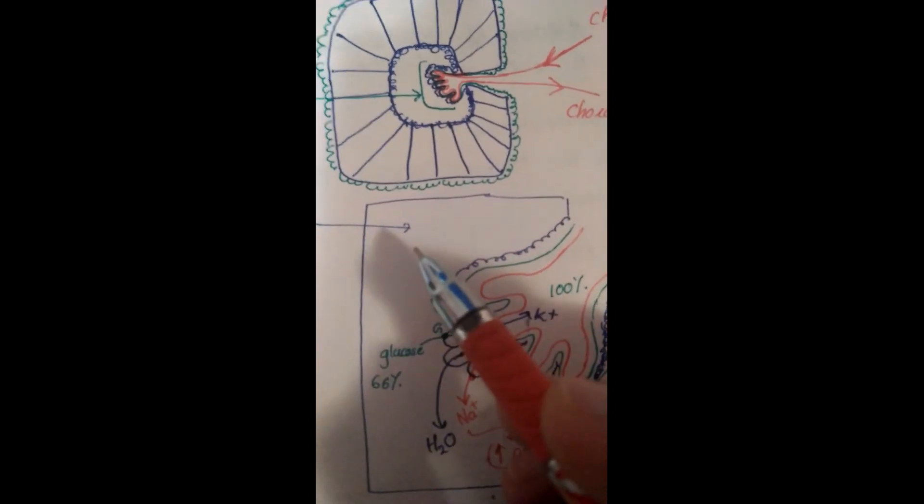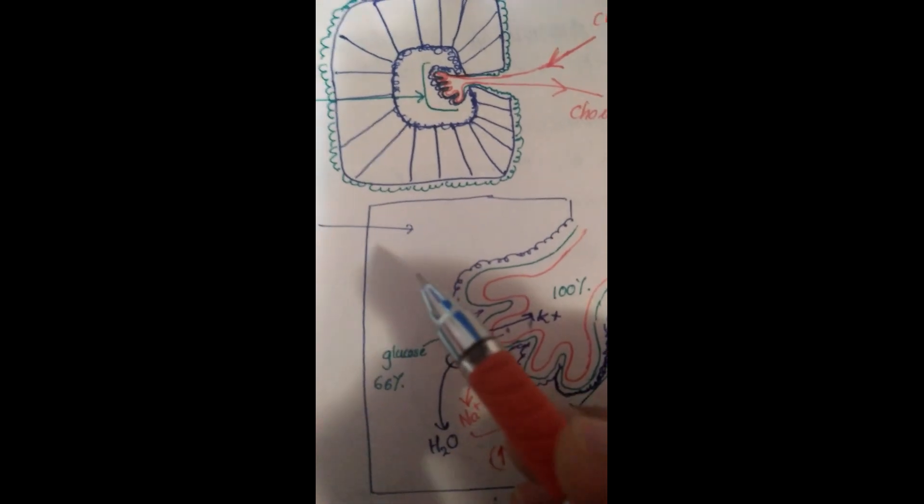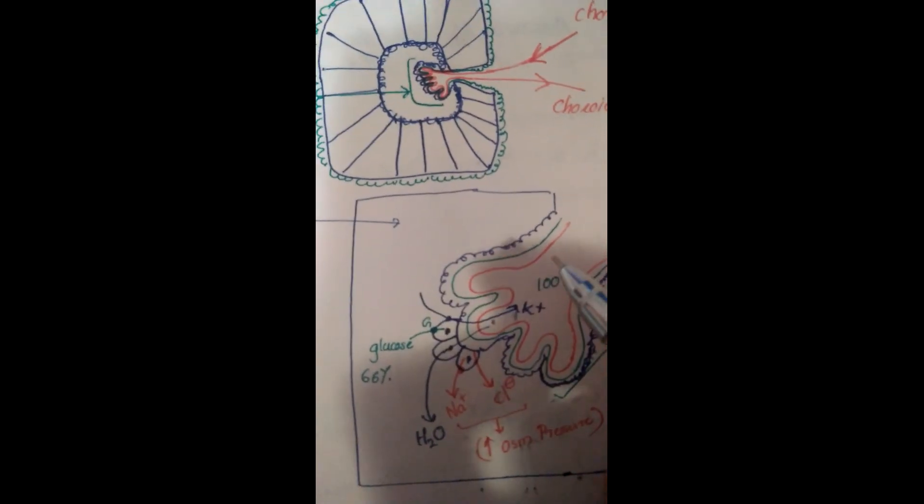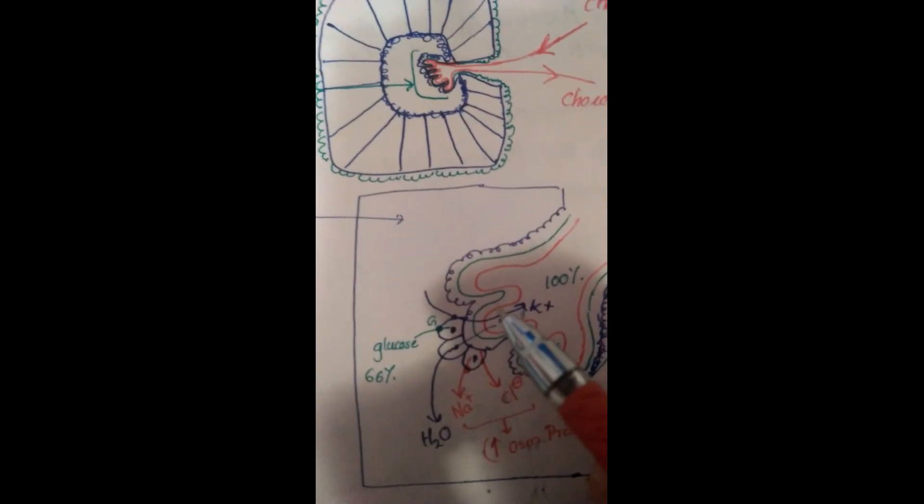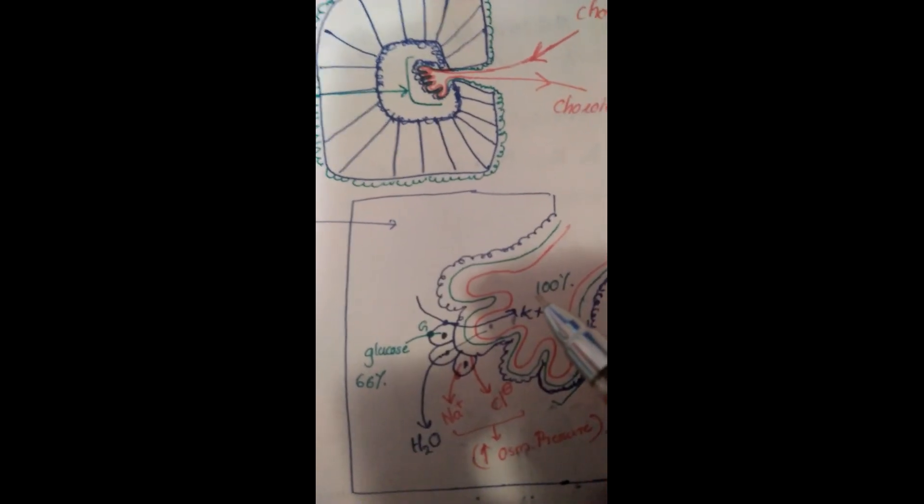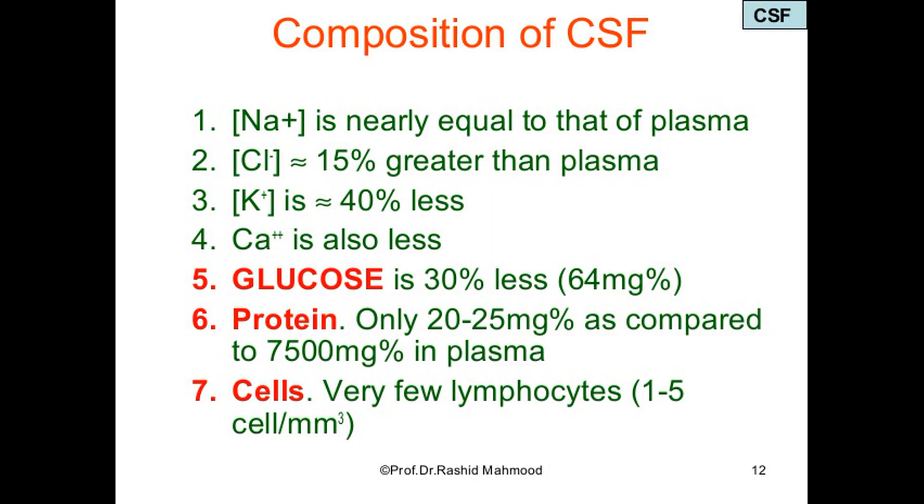Also remember that potassium goes back to the blood from the CSF, so the amount of K+ in CSF is less than blood. The composition of CSF is predominantly water. Na+ is nearly equal to that of plasma. Chloride ion is 15% greater than plasma.